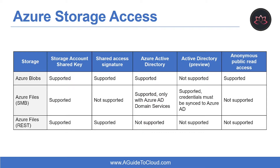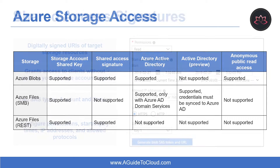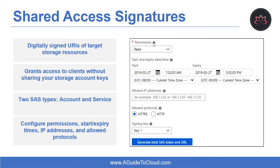The fourth option is shared access signature (SAS) — a URI that grants restricted access rights to an Azure storage resource. The last option is anonymous access to containers and blobs. You can enable anonymous public read access to a container and its blobs in Azure blob storage, granting read-only access without sharing your account key and without requiring a shared access signature.